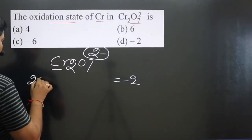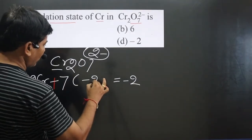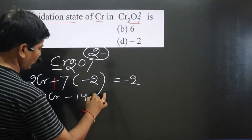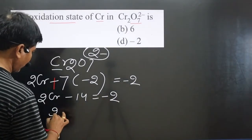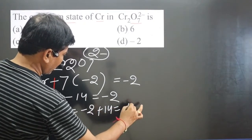For Cr, we have to calculate the oxidation number. There are 2 Cr atoms. How many oxygen? 7 oxygen, each oxygen is -2. We can simplify: 2Cr + 7(-2) = -2, which gives 2Cr - 14 = -2. Then we have 2Cr = -2 + 14, which gives us +12.